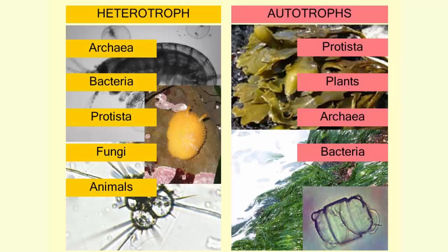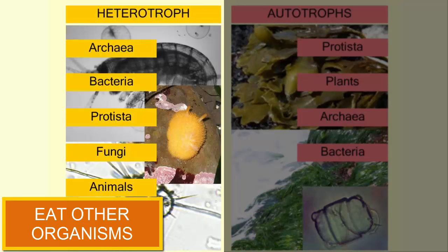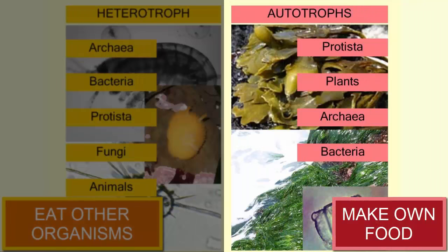All living organisms can be classified as autotrophs or heterotrophs. Heterotrophs acquire their food by eating other organisms. Autotrophs make their own food, usually through a process called photosynthesis.